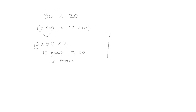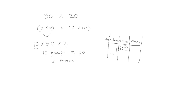So on our place value chart, we have 30 — that's 3 tens. We're going to multiply by 10, which gives us 3 hundreds. These 3 tens multiplied by 10 become 3 hundreds, and we're going to do it 2 times. That's a different way to show our 600. So we can regroup and reorder our factors to make multiplication easier.